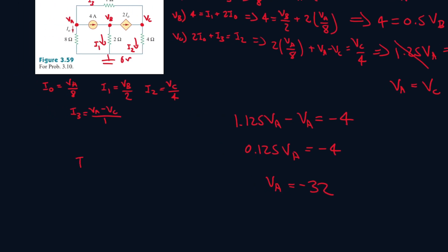Now we can find IO. IO will be VA, which is minus 32, all over 8, and that gives you minus 4.